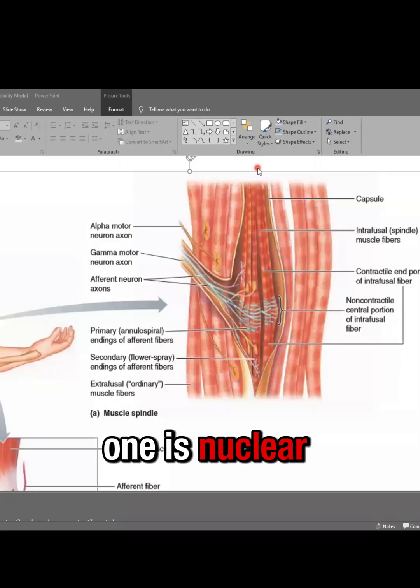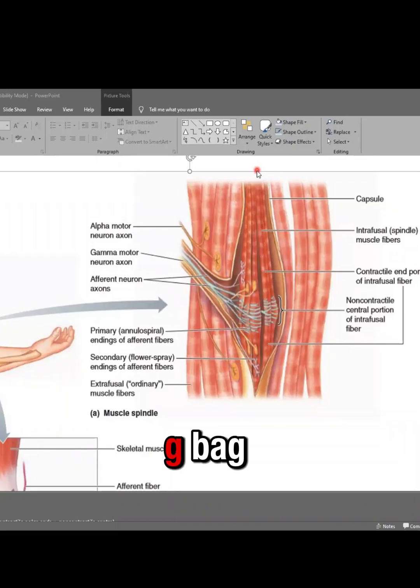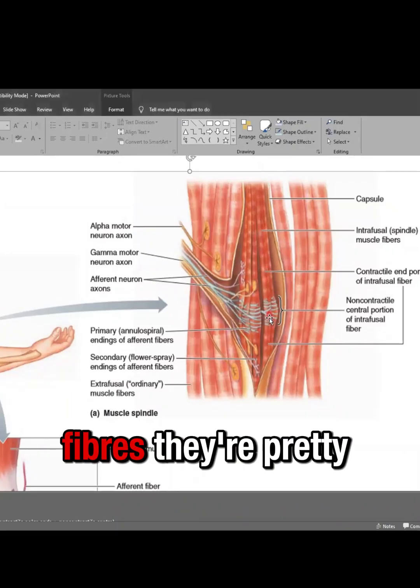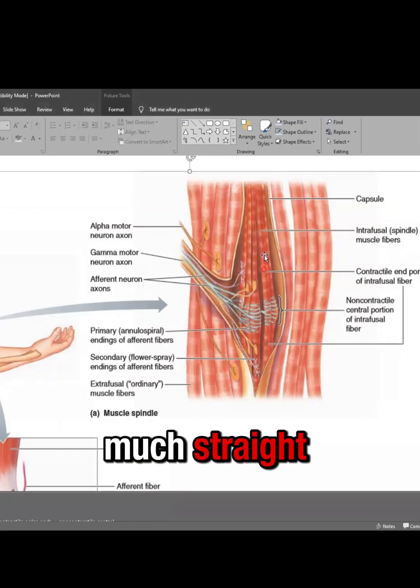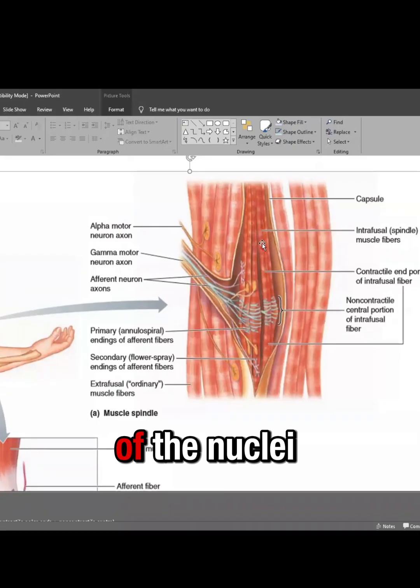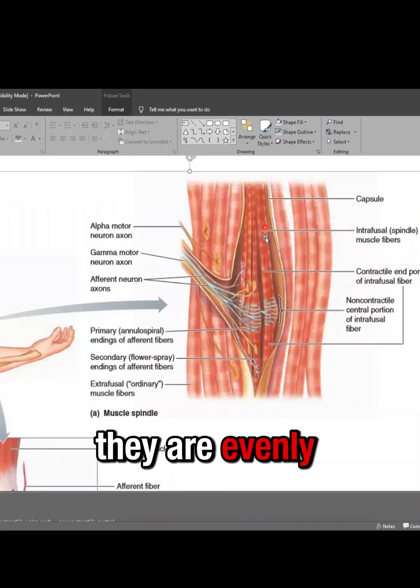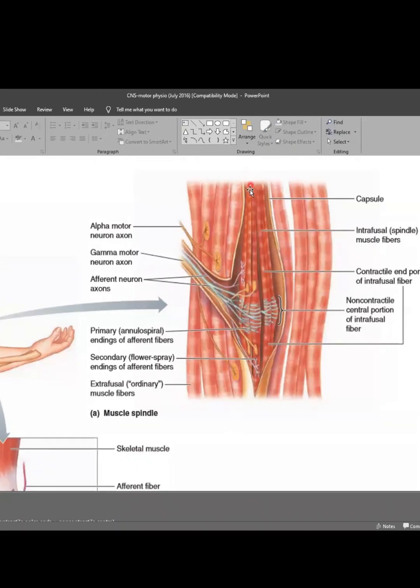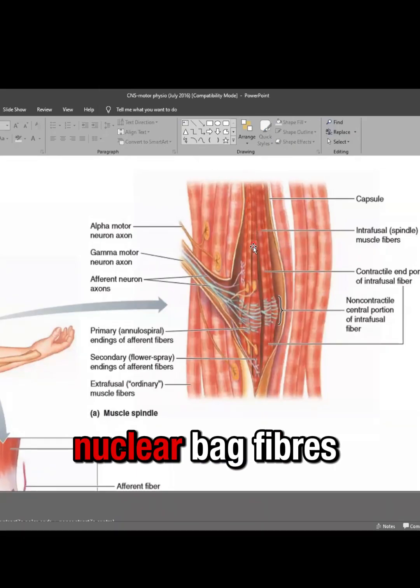One is nuclear chain fibers. They are chain-like fibers. And the other ones are nuclear bag fibers, B-A-G bag. The nuclear chain fibers they're pretty much straight. The yellowish markings of the nuclei, they are evenly distributed throughout the length of the muscle.